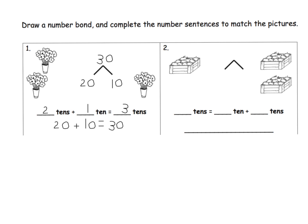Here we're being asked to draw a number bond and complete the number sentences to match the pictures. We've got two 10s over here and one 10 over here, so 20 and 10 gives us 30. Two 10s plus one 10 equals three 10s, and 20 plus 10 is equal to 30.